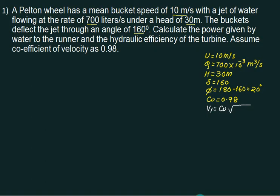So U is equal to 10, Q is equal to 700 times 10 to the power minus 3, H is equal to 30 meters, and Cv is given as 0.98. From Cv we can calculate V1 is equal to Cv times the square root of 2gH.